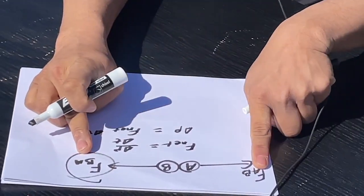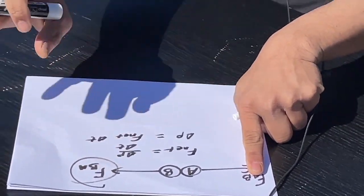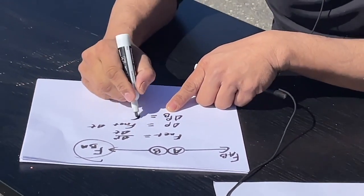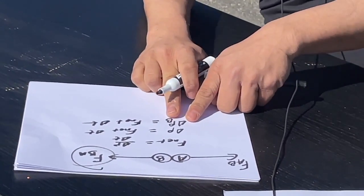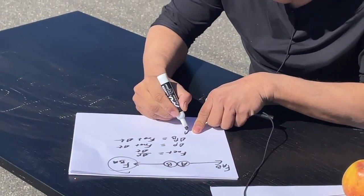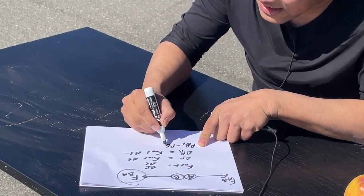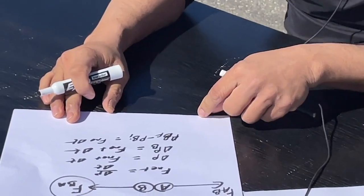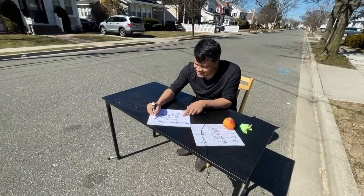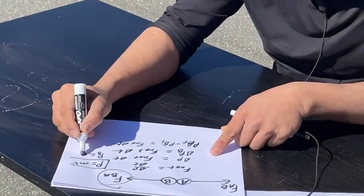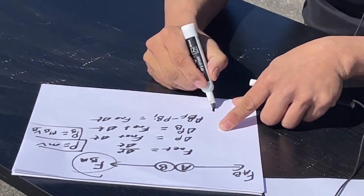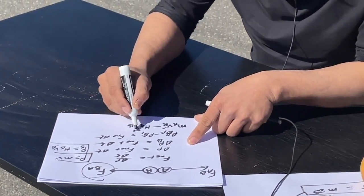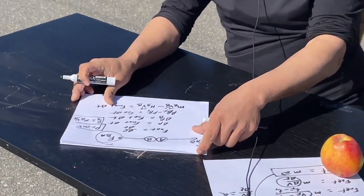Focusing on ball B: there is a force acting on ball B because of ball A — if you remove ball A, there will be no force on ball B. So the change in momentum of ball B equals F net times delta t. That means pb final minus pb initial equals F net times delta t. Since momentum is mv, we write: mb times vb final minus mb times vb initial equals F net times delta t.